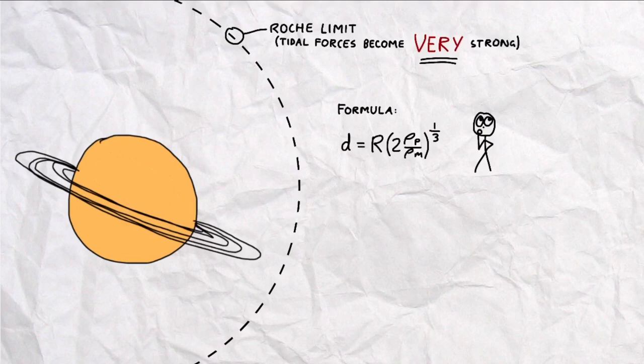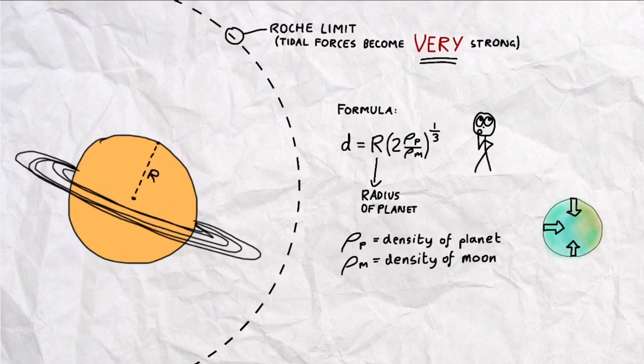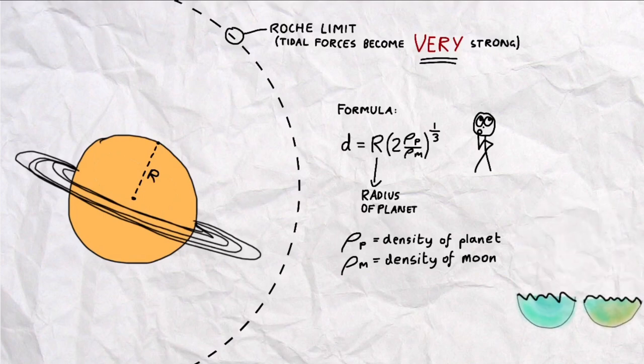Now, you may be thinking, what exactly does this formula indicate? Very simply, R is the radius of the primary planet and the two rhos are the density of the planet and the moon respectively, which actually makes sense because the more firmly held together the moon is, the harder it will be for it to break apart by the same tidal force.